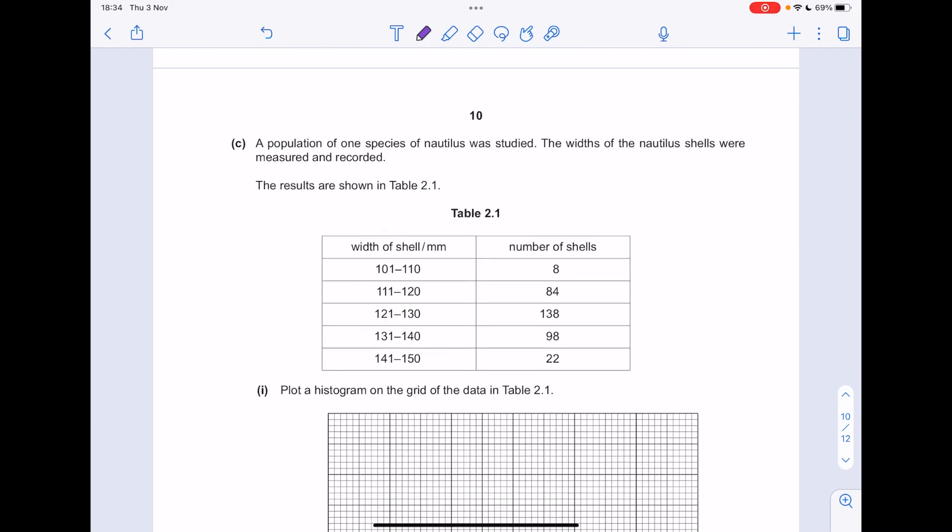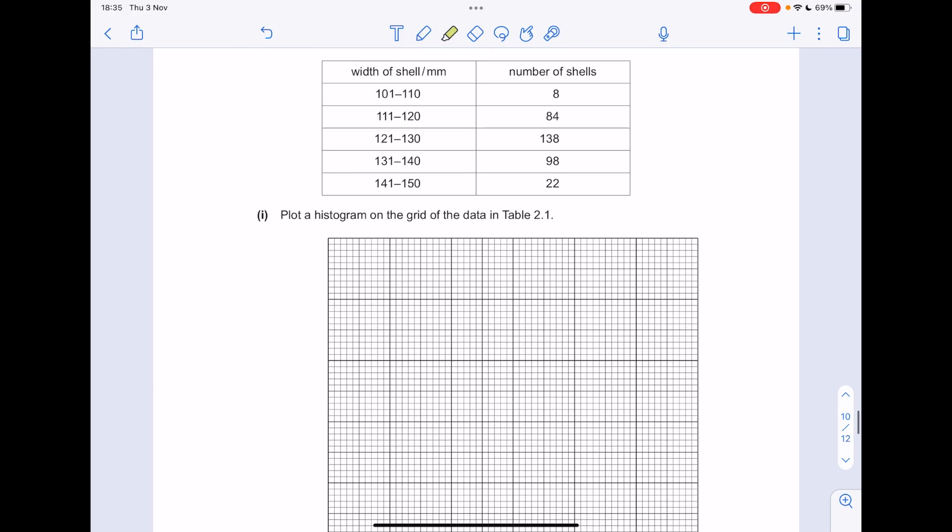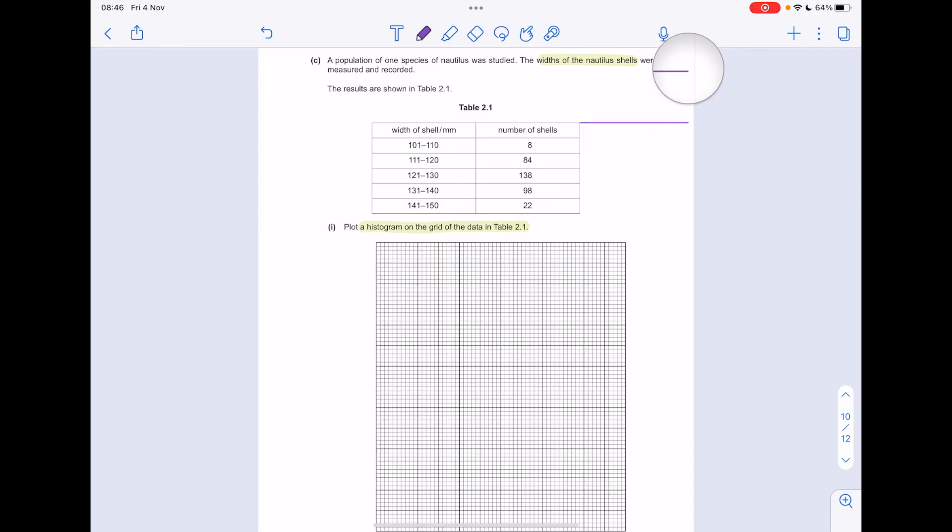A population of one species of nautilus was studied. The widths of the nautilus shells were measured and recorded. Here are the results. Plot a histogram on the grid of the data shown in table 2.1. Let's add a few extra columns on this table in order to begin our histogram.